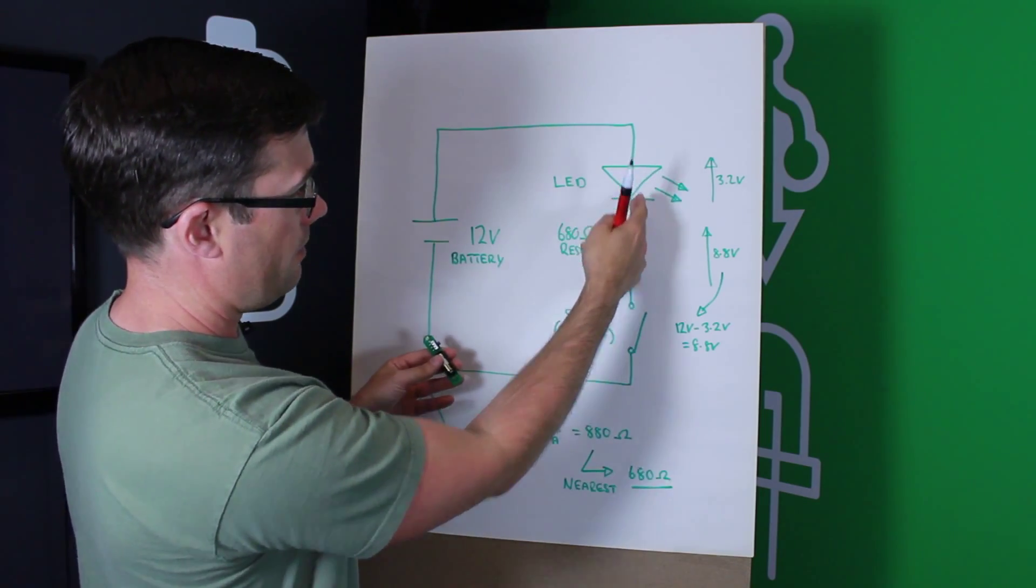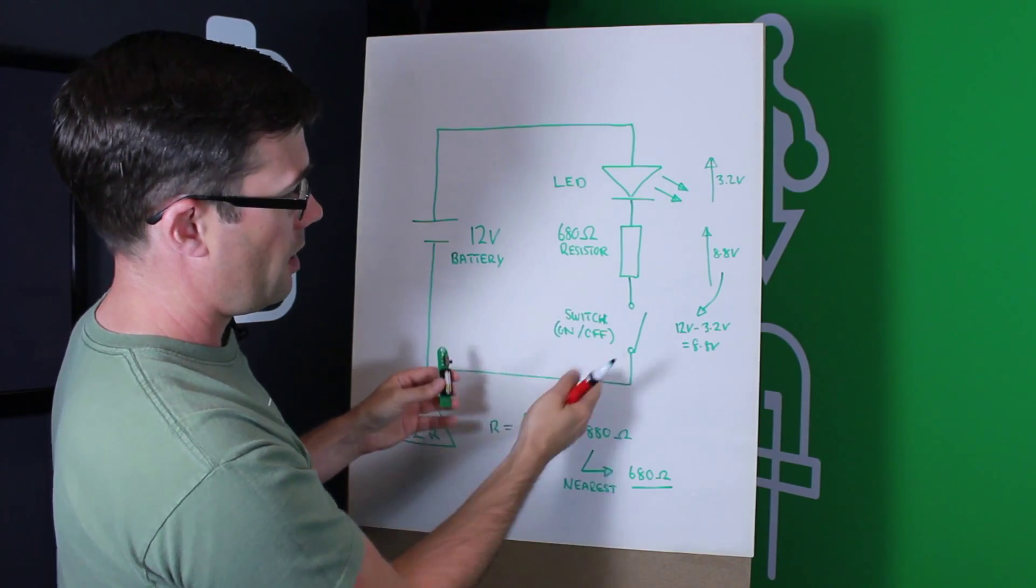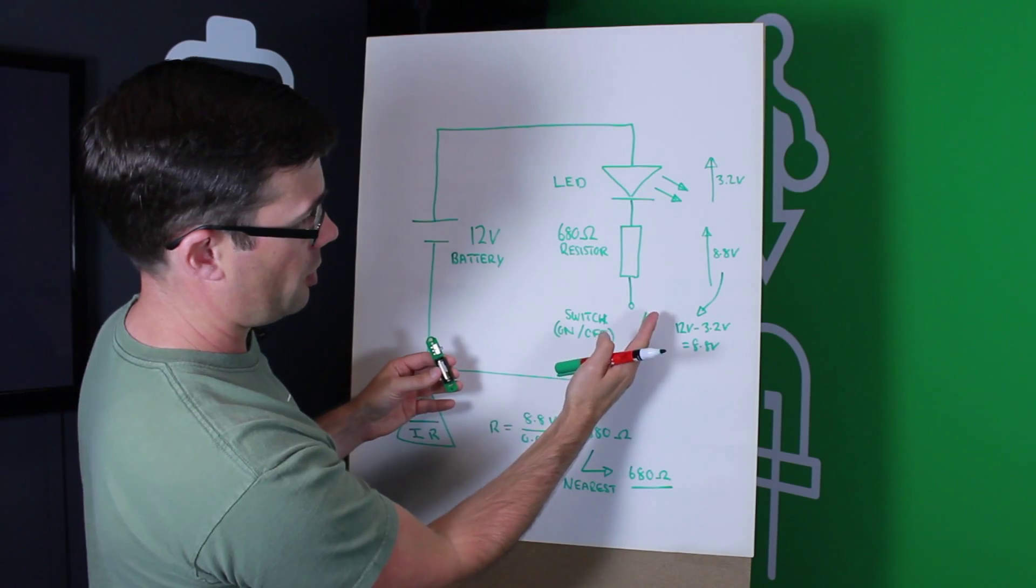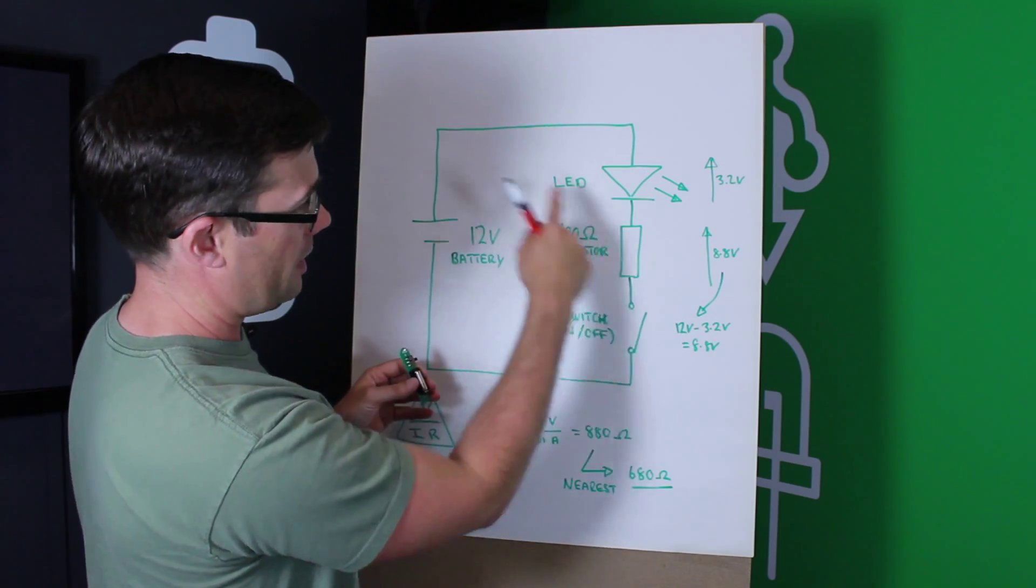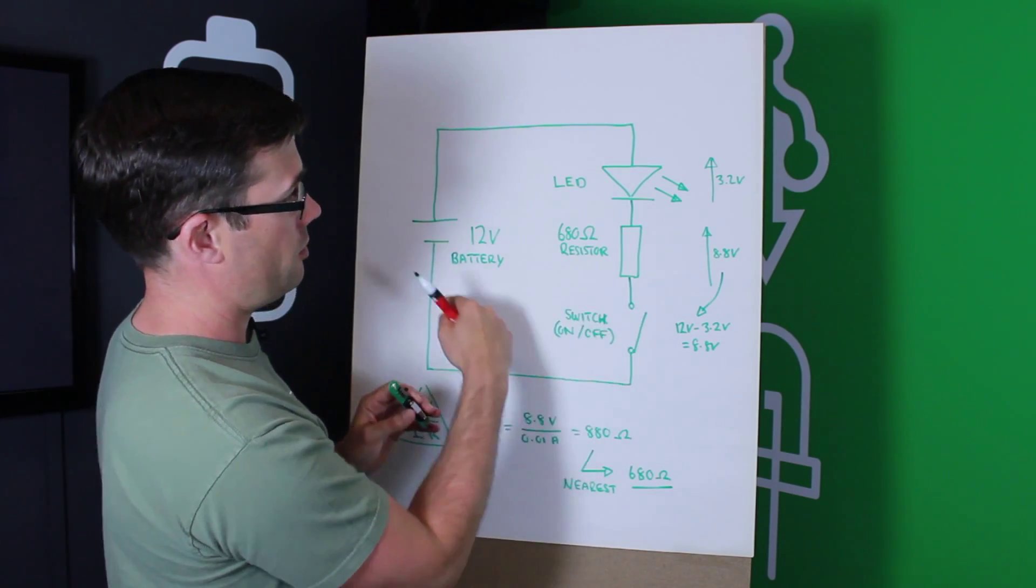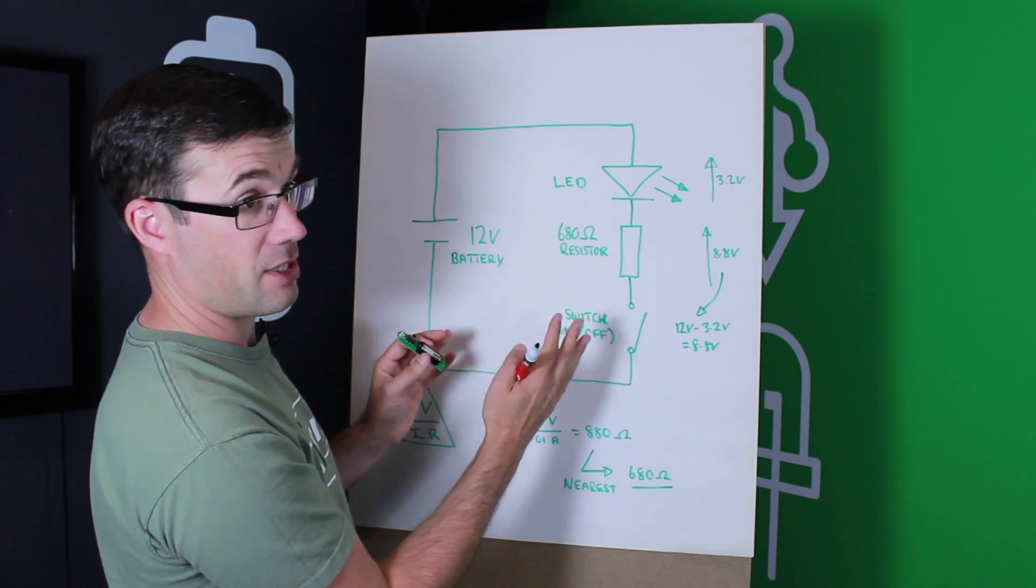We have the LED. We have the resistor, which you can see at the back here. And we have the switch, which is just here. And the switch closes and completes the circuit when the LED is on, and it's open, opening the circuit so no current can flow when the circuit is off.